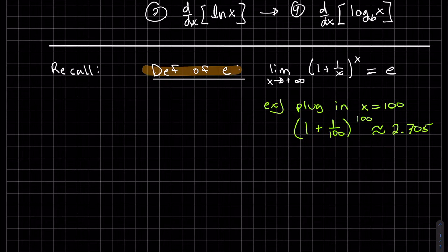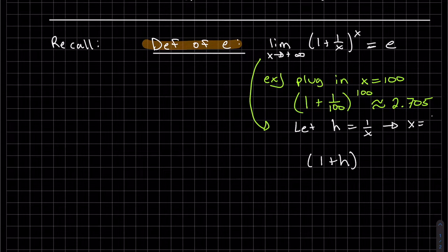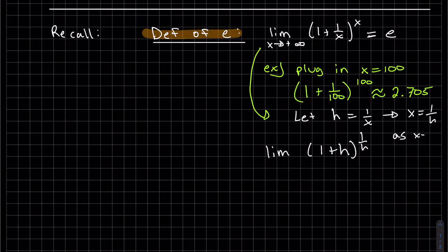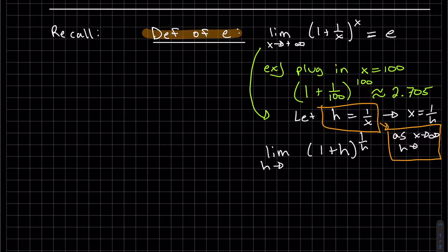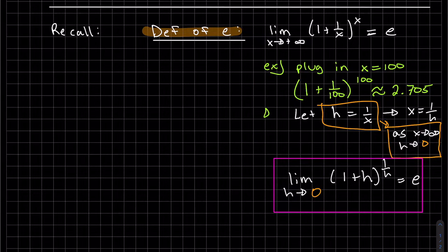The second definition I want for e — I can use this — we're going to use a substitution. We'll get 1 plus h, because we're substituting 1 over x is h. If that's true, what is x equal to? If I solve for x, I get x equal to 1 over h, so that becomes 1 over h. Since we've turned it to h, as x approaches infinity, h approaches 0 — because it's 1 over infinity. Therefore, this is also equal to e. We're going to need that for our proof.